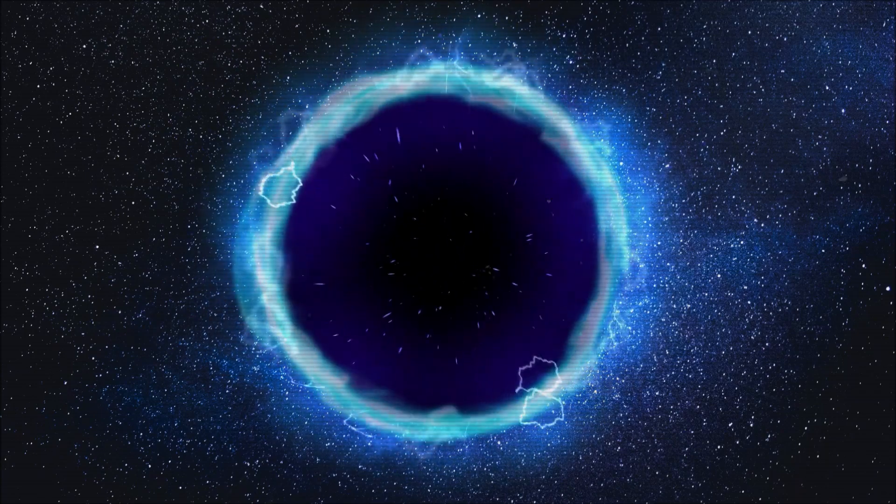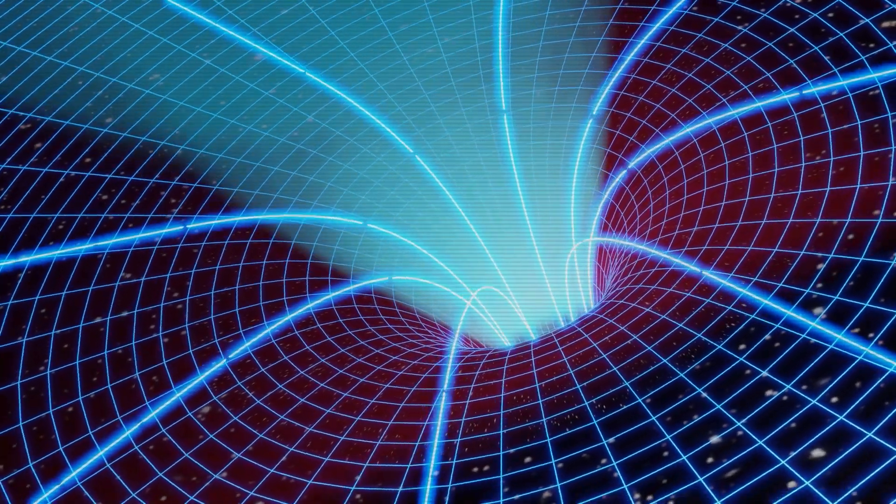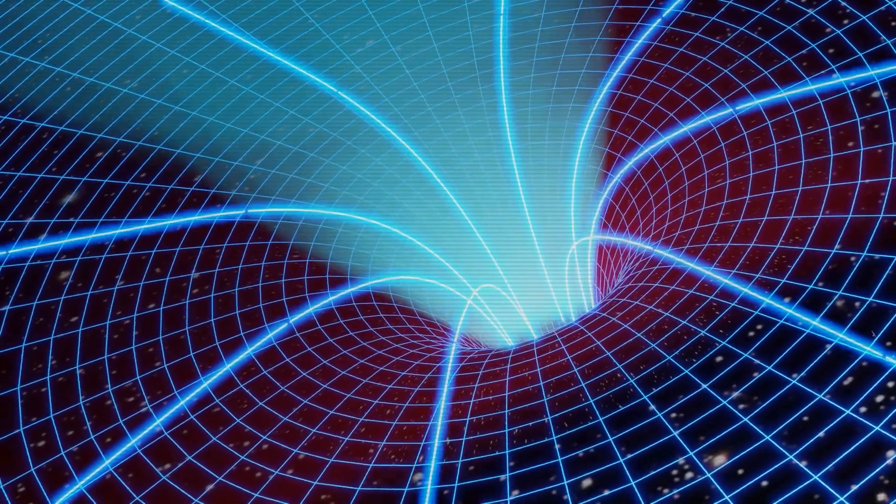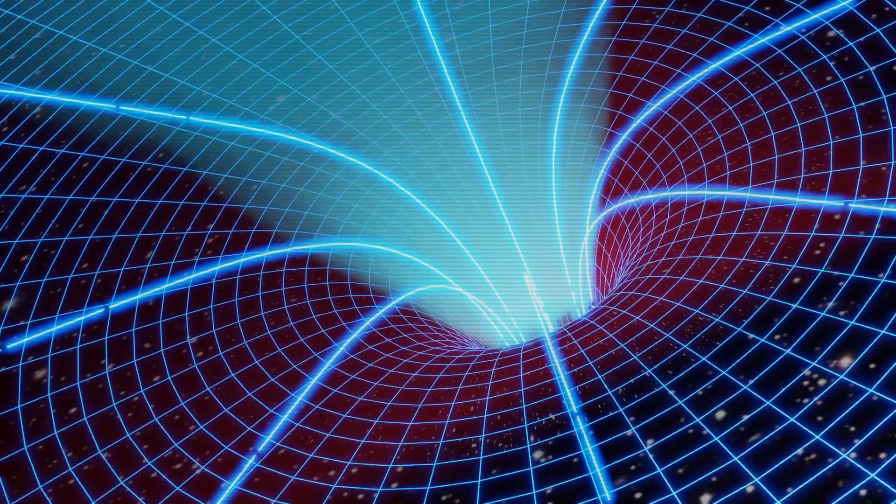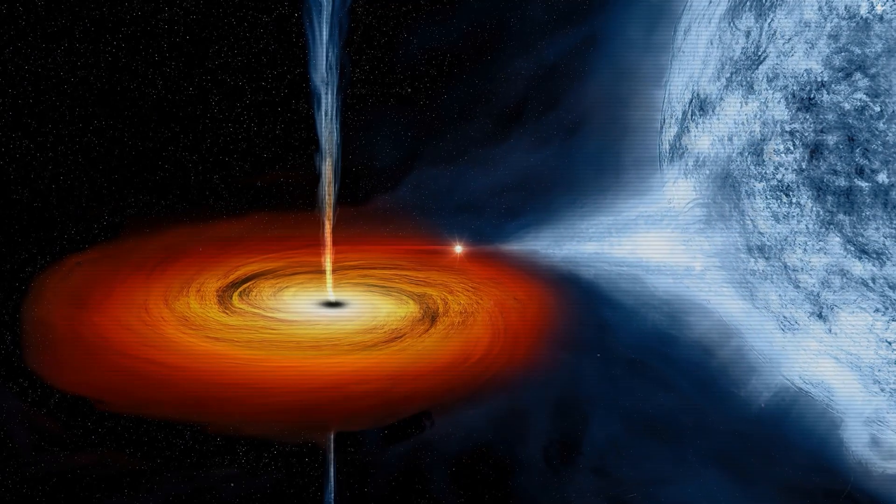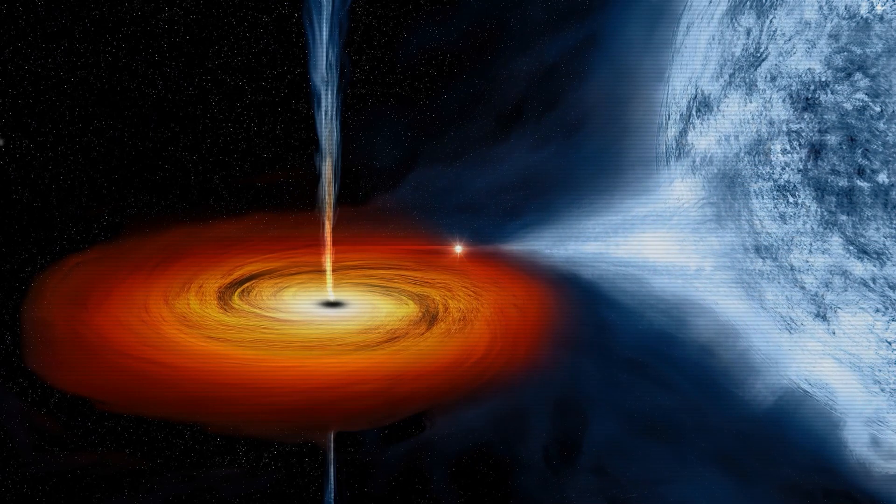This is called a Planck star, and it's a theoretical possibility envisioned by loop quantum gravity, which is itself a highly hypothetical proposal for creating a quantum version of gravity. In the world of loop quantum gravity, space and time are quantized. The universe around us is composed of tiny discrete chunks, but at such an incredibly tiny scale that our movements appear smooth and continuous.